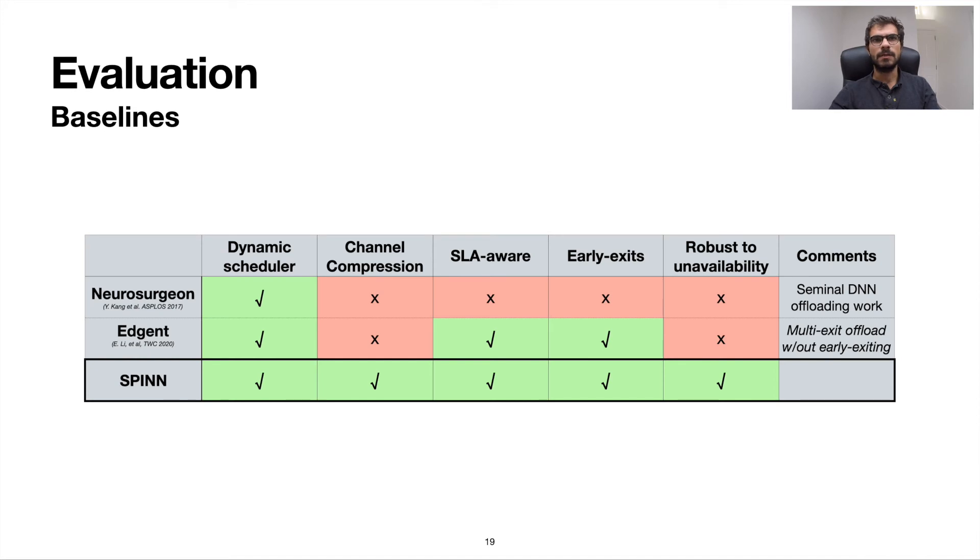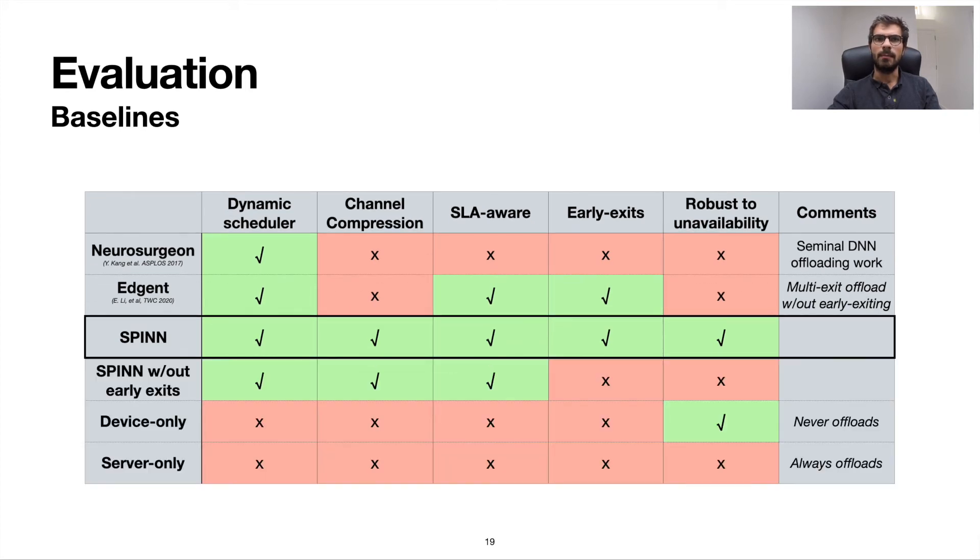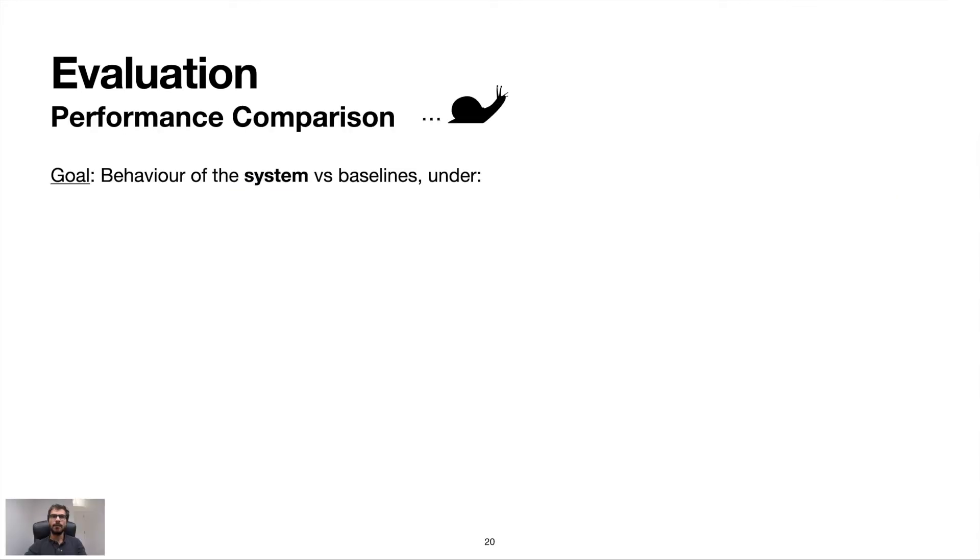As baselines, we employ the seminal Neurosurgeon paper, which provides a single objective dynamic offloading without early exit solution, and Agent, which is a system that uses multi-exit architectures, but only for subgraph selection, not for early exiting. Moreover, we use ablated variants of spin, such as spin without the early exiting mechanism, as well as device and server-only execution.